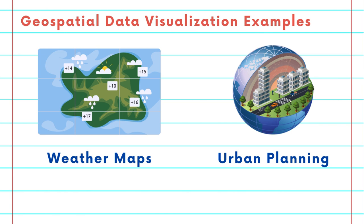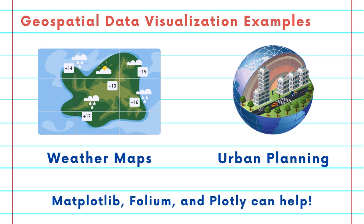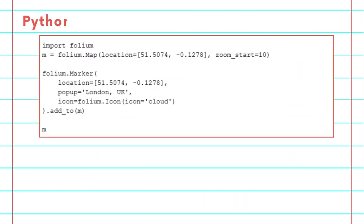Now you might wonder, how is it done? Python offers a wealth of tools and libraries for geospatial data visualization, such as Matplotlib, Folium, and Plotly. These libraries allow you to create, customize, and interact with maps, adding layers of data to tell your story using Python.